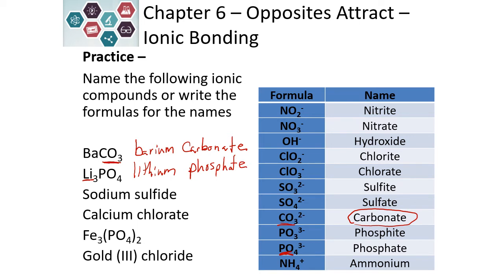Now we have a name and we want to go the other direction. So sodium is Na. It's in the first column of the periodic table, so it's got a plus one charge. Sulfide ends in -ide, so it is not a polyatomic ion — it's just the element by itself. Sulfide is in column 6, so it has a negative 2 charge. Our formula is going to be Na2S to balance the charge and make a neutral compound.